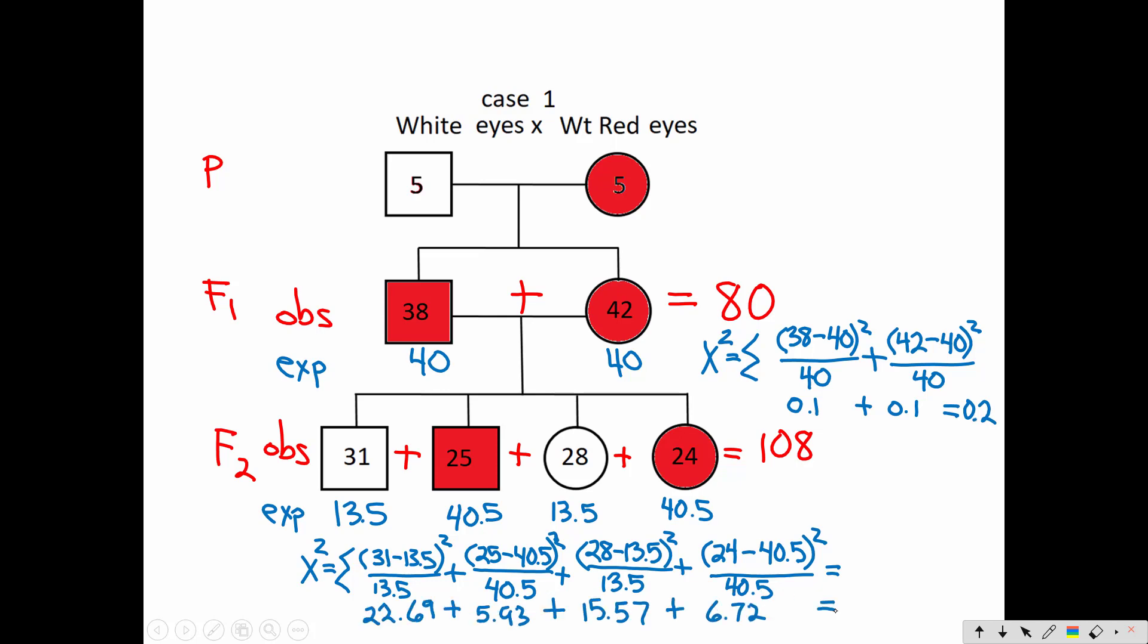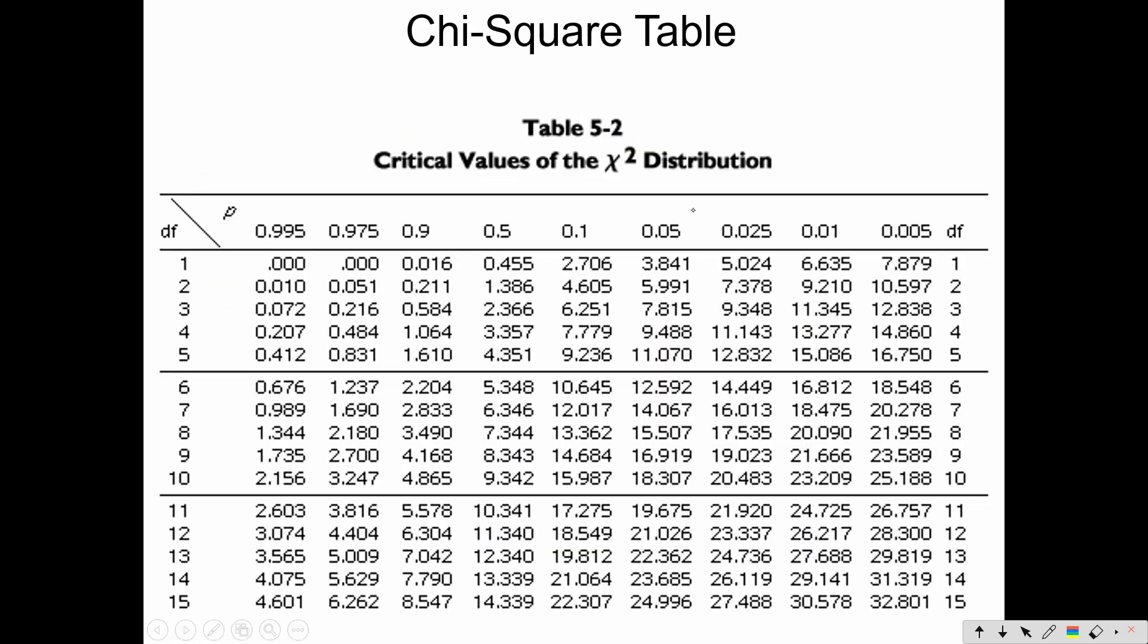When I add all those up, I get 22.69 plus 5.93 plus 15.57 plus 6.72. I've rounded the numbers a little. And the total, 50.91. That's a huge chi-square number. Way larger than our critical value.